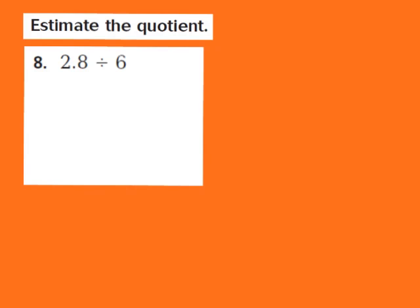Now let's work question number 8. For question 8, they give us 2 and 8 tenths divided by 6. When I look at this problem, I notice the divisor of 6 is greater than the dividend of 2 and 8 tenths. So I'm going to rename 2 and 8 tenths as 28 tenths.